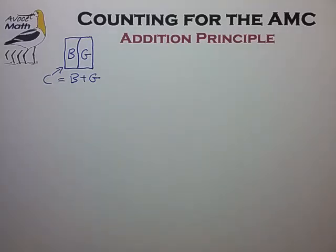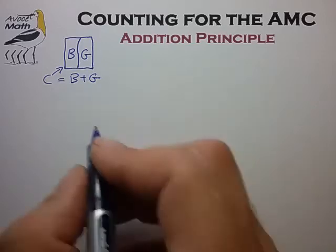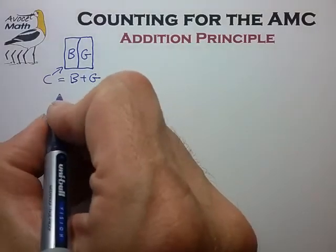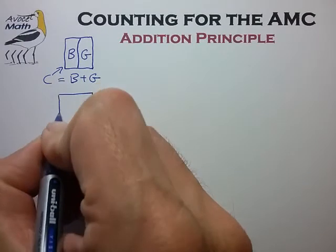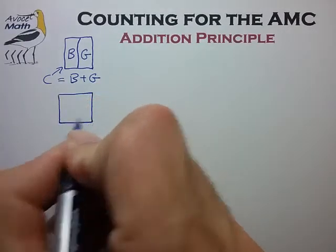So let's take a look at an example where the division into subsets is less obvious. Let's consider the case of a car dealership where we want to count the number of cars on our car lot.